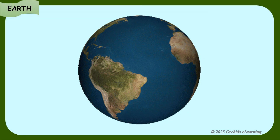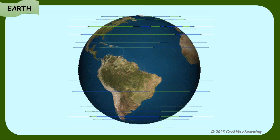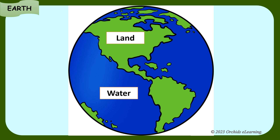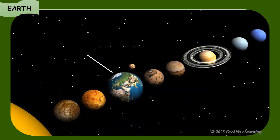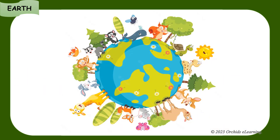The Earth is the planet we live on. Look at the picture of the Earth. There is land and water on the Earth. Our Earth is the third planet in the Solar System. It was formed many years ago. It is the only planet known to have plants and animals.